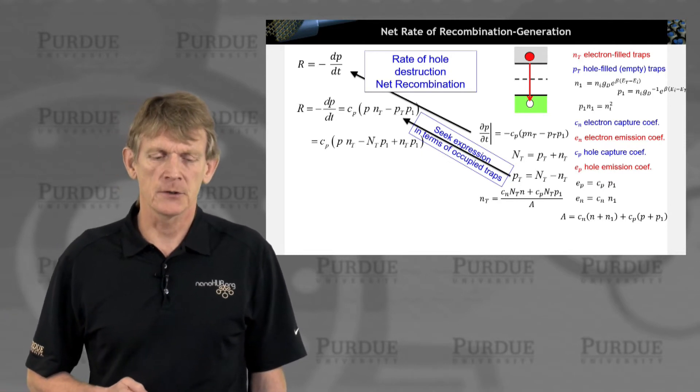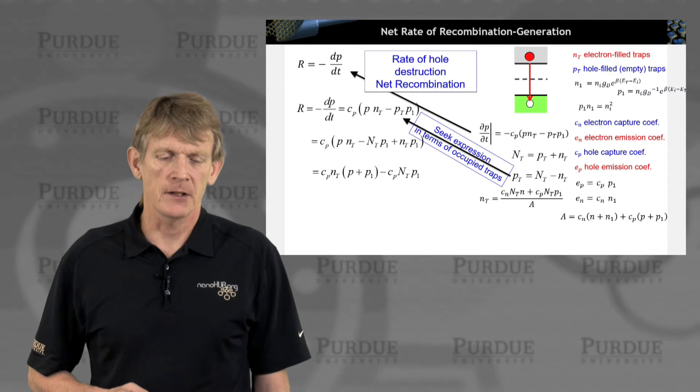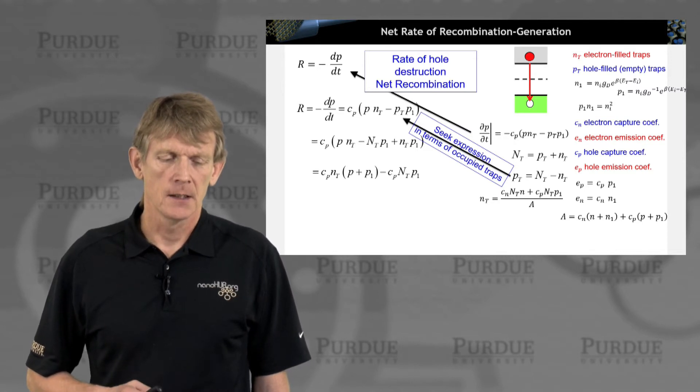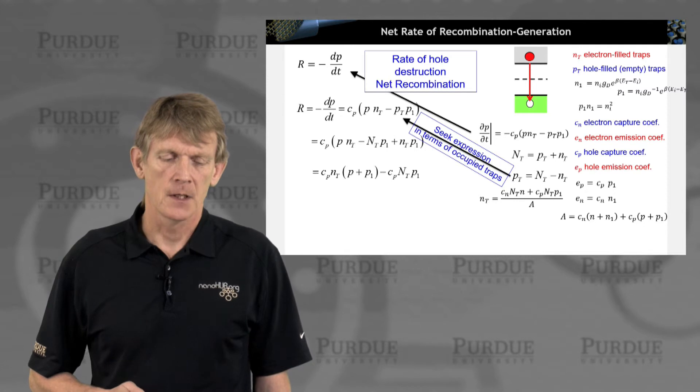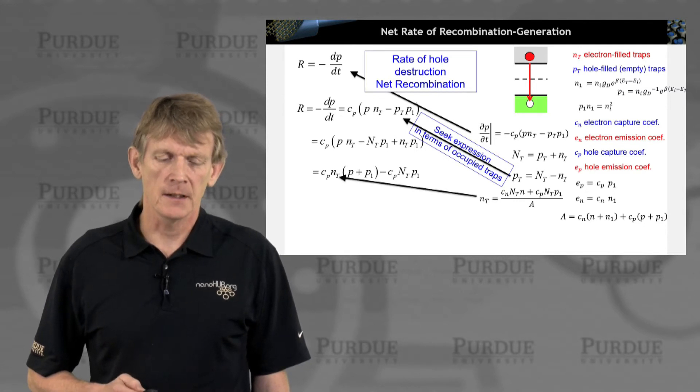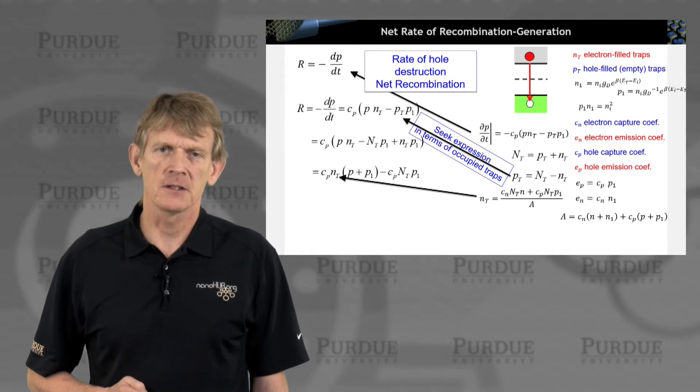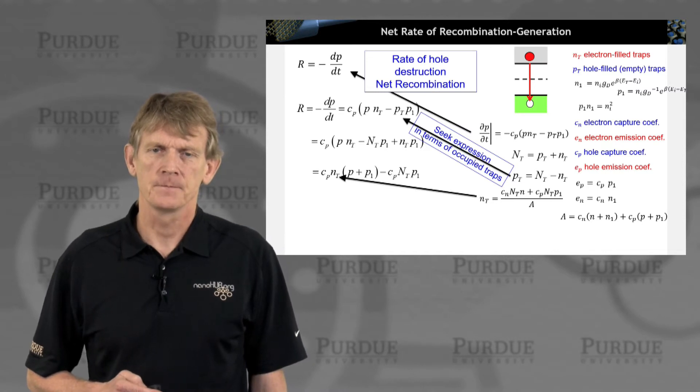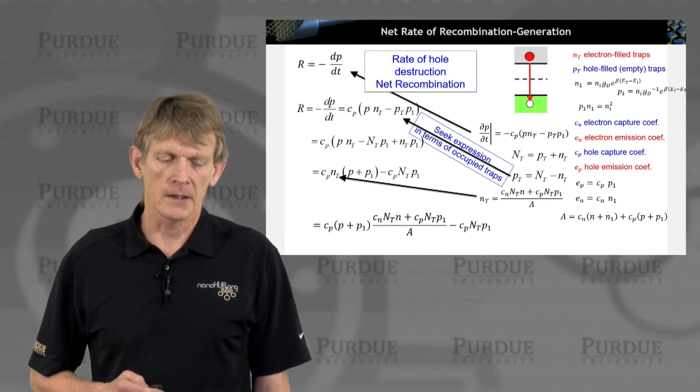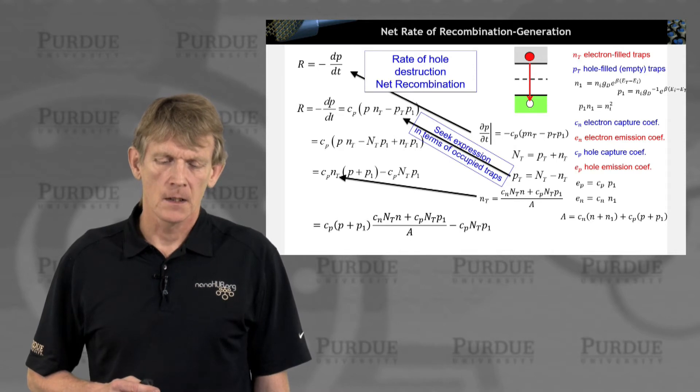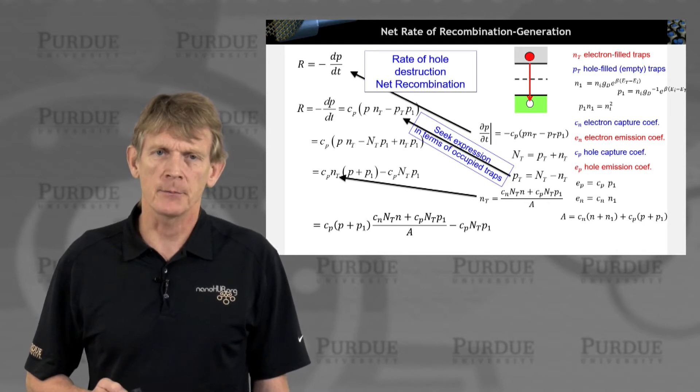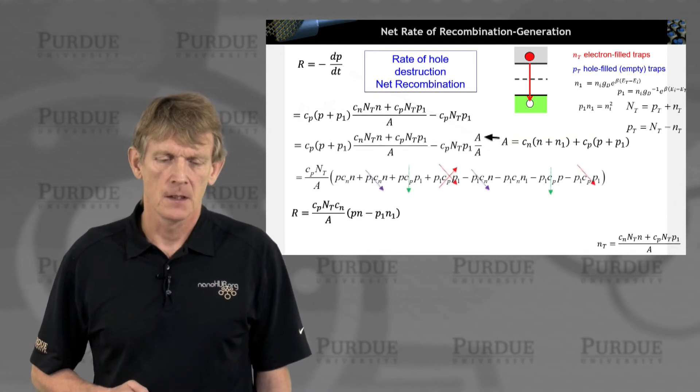Alright, so not much happened. We just have one more term. But we can have everything now in terms of capture of electrons Cn and Cp and bring out these expressions. Now we can have the occupation, the expression that we had before, the little Nt, occupation of traps in steady state. We'll plug this in here.